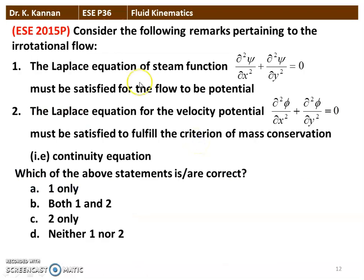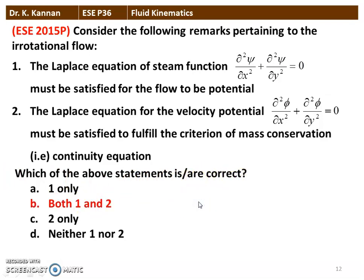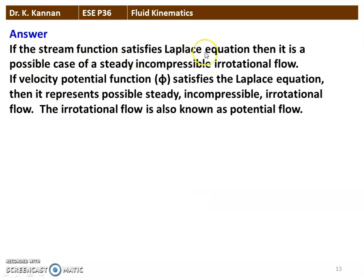The next question from the 2015 question paper: consider the following remarks pertaining to irrotational flow. Statement 1: the Laplace equation of the stream function ∂²ψ/∂x² + ∂²ψ/∂y² = 0 must be satisfied for the flow to be potential. Statement 2: the Laplace equation for the velocity potential ∂²φ/∂x² + ∂²φ/∂y² = 0 must be satisfied to fulfill the criterion for mass conservation (continuity equation). The correct answer is both statements 1 and 2 are correct, since if ψ or φ satisfies the Laplace equation it represents possible steady incompressible irrotational (potential) flow.